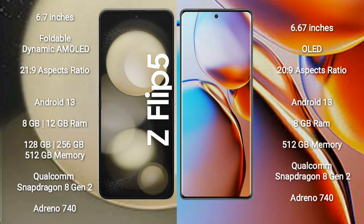Samsung Galaxy Z Flip 5 comes with 8GB or 12GB RAM and 128GB to 256GB internal storage, powered by a Qualcomm Snapdragon 8 Gen 2 processor with Adreno 740 GPU. Motorola Edge Plus comes with 8GB RAM and 512GB internal storage, also powered by a Qualcomm Snapdragon 8 Gen 2 processor with Adreno 740 GPU.